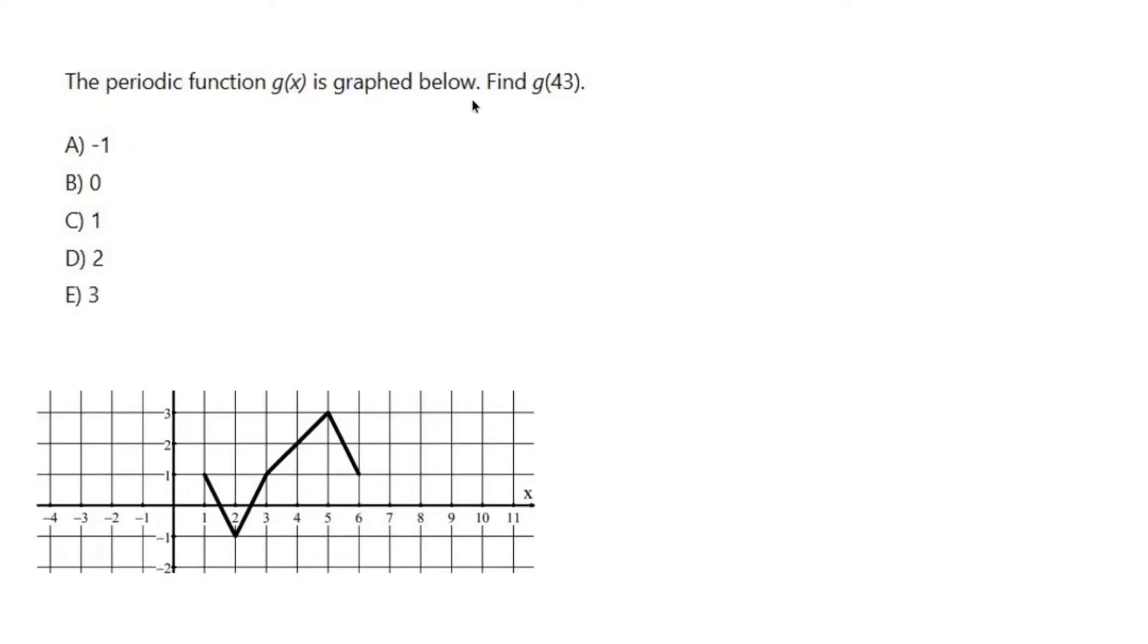The periodic function g(x) is graphed below. This is going to repeat the same exact way. I'm not even going to attempt to draw it, but it's going to repeat the same exact way every however many. What is g(43)?